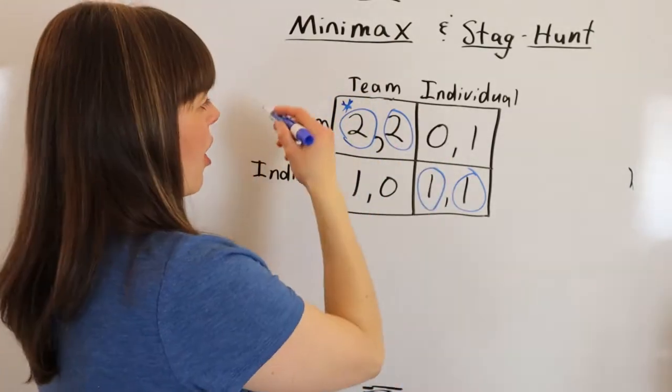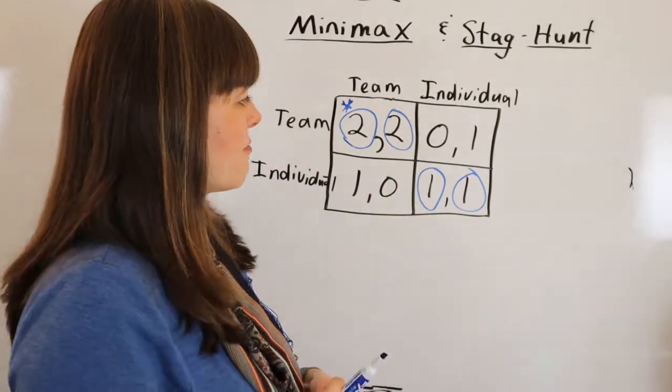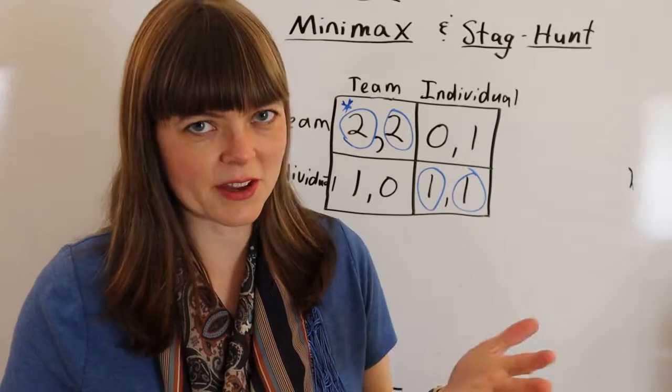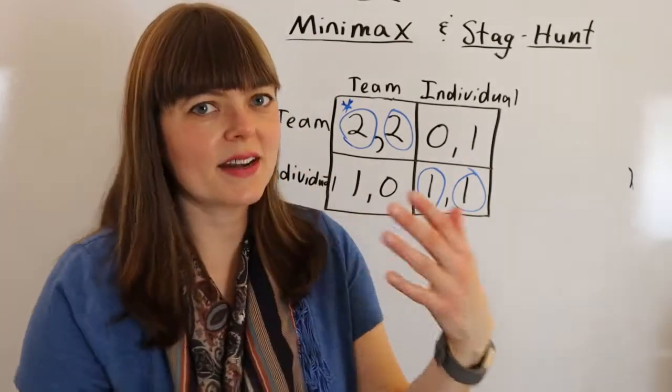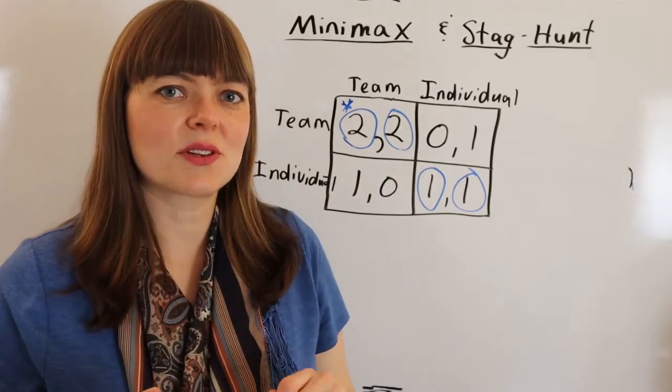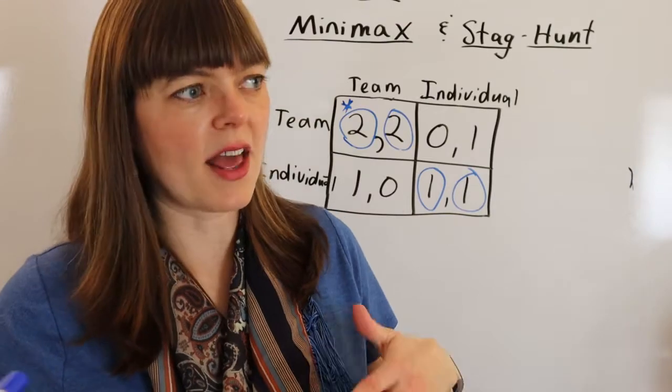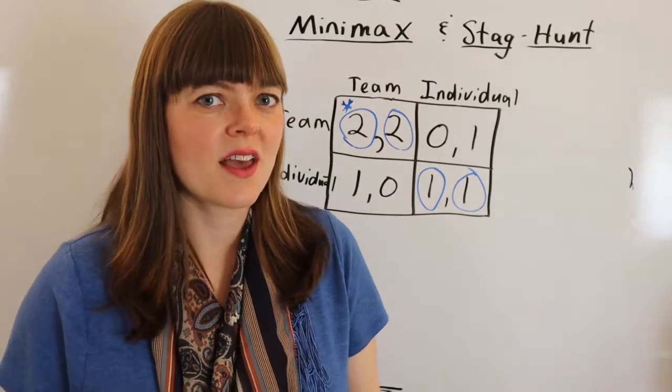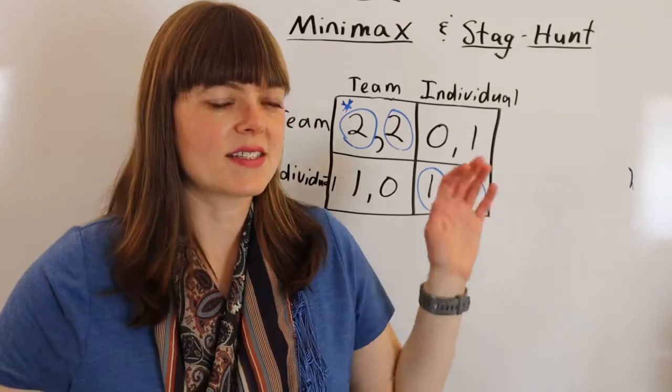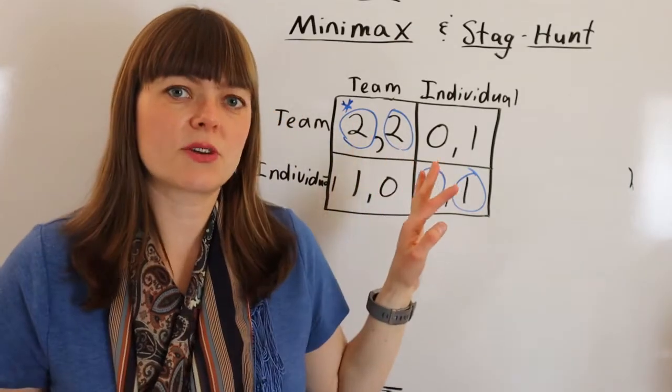So you would think you would always end up in the teamwork scenario. And if both players are Nash equilibrium thinkers, or if we have this repeated game where we kind of play until we end up at this Nash equilibrium, then we're going to end up up here. Because Nash equilibrium, even if it doesn't happen on any individual round, as people repeat games, they tend toward the Nash equilibrium in the long run.